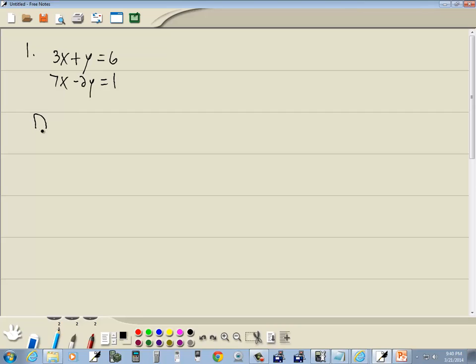Normally, we refer to the determinant of the coefficients, the numbers in front of our variables, as D. So it would have 3, 1, 7, negative 2.